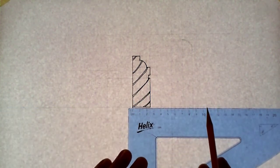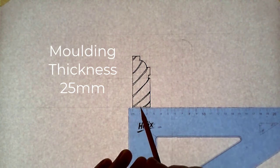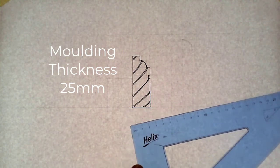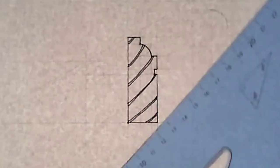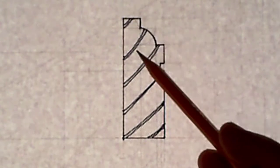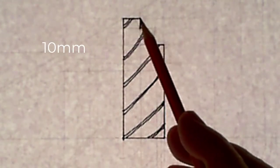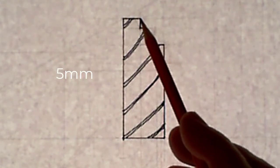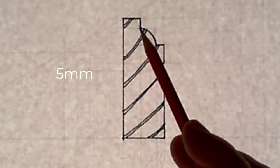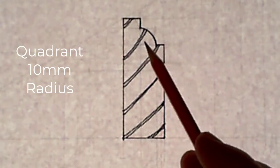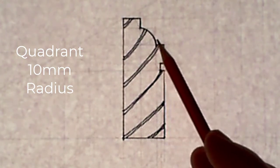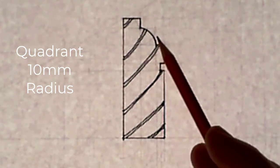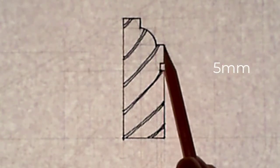The thickness of the moulding detail is 25mm. The height of the moulding detail is 70mm. The details here are 10mm across for the top, 5mm down. Then you have a quadrant here — a 10mm quadrant. So you're stepping down 10mm, bringing a light line across and drawing this quadrant in, 10mm radius. Then you have a 5mm return.